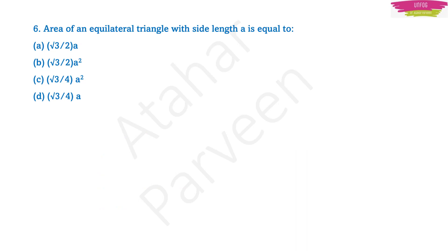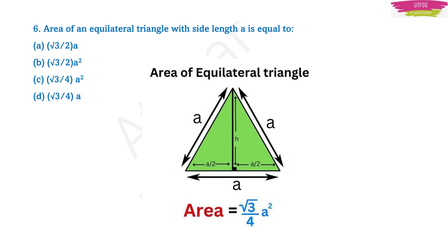Question number 6: the area of an equilateral triangle with side length a is equal to what? They are asking you a direct formula. You should know that the area of an equilateral triangle is √3/4 × a². This question gives you an indication to please learn all the formulae from mensuration, because you will compulsory get 2 to 3 questions including circles, polygons, quadrilaterals and triangles. If you have a formula list, please go through it.